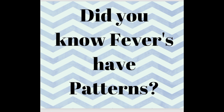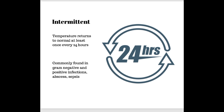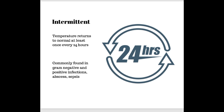Did you know that fevers have patterns? For those who like to dig deeper — stay tuned. Number one: intermittent fevers. This is where your temperature will return to normal at least once in a 24-hour period. This is pretty common for those with gram negative and gram positive infections, and it's something we see with blood work to identify abscess and sepsis patients. It doesn't mean this is the only fever type these patients can have, but it's commonly found — they'll go febrile, then come back down at least once in 24 hours.